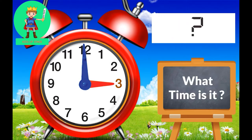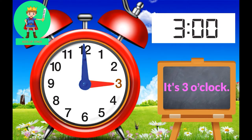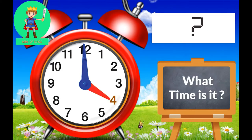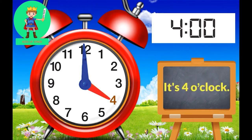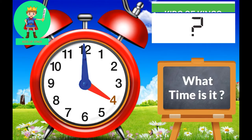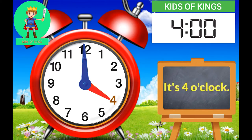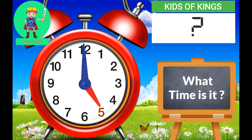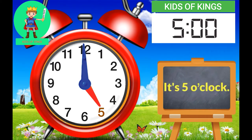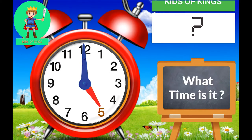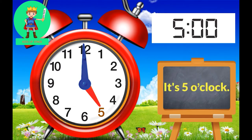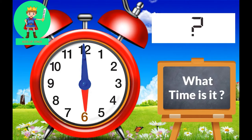What time is it? It is two o'clock. What time is it? It is three o'clock. What time is it? It is three o'clock. What time is it? It is four o'clock. What time is it? It is four o'clock. What time is it? It is five o'clock.